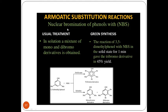An example of an aromatic substitution reaction: the nuclear bromination of phenols with N-bromosuccinimide (NBS). In a usual solution treatment, a mixture of mono and dibromo derivatives is obtained. If we try to do the same reaction in green synthesis — the reaction of 3,5-dimethylphenol with NBS in the solid state for one minute — a tribromo derivative is obtained in 45% yield.